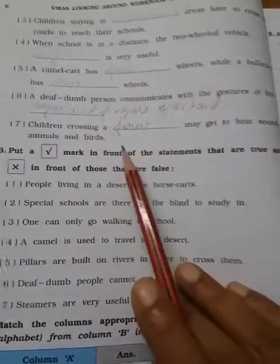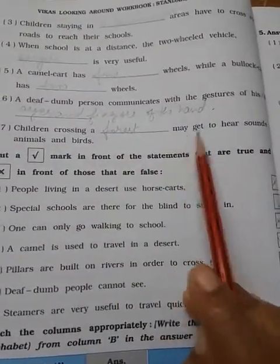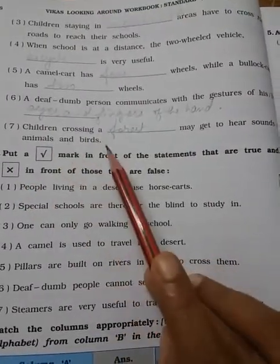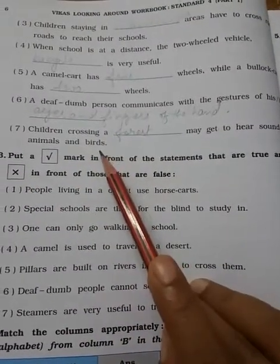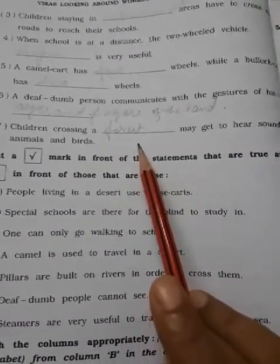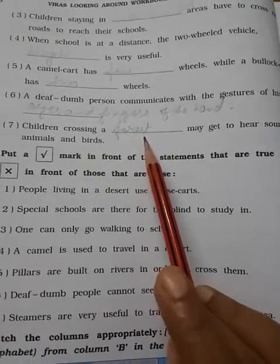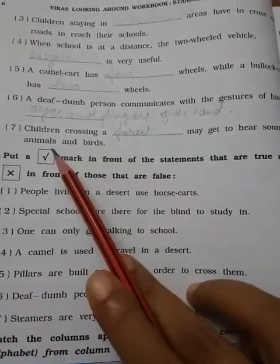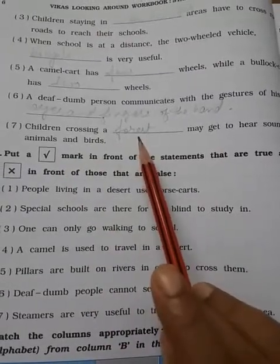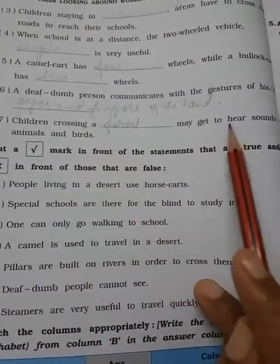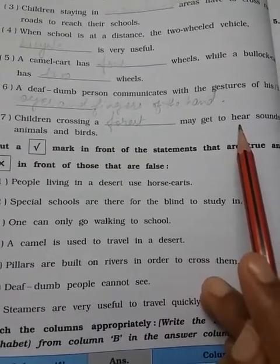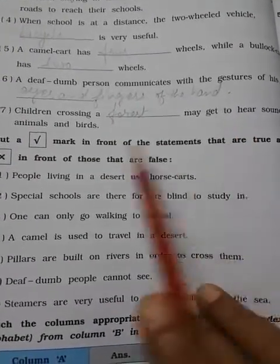Children crossing a blank may get to hear sounds of animals and birds. So in forest, we know animal sound, bird sound. In road, we can see birds, we can see animals, but in the forest while crossing the forest, we can hear. Hear means to listen. Listen the voice. Listen the sound.